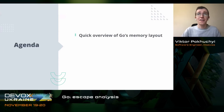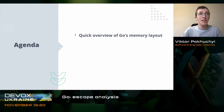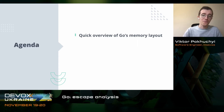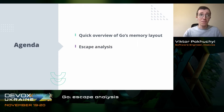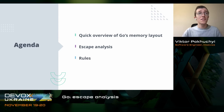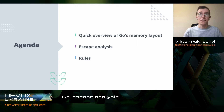So let's take a look at our agenda. First of all, we will take a look at a small overview of Go Memory layout — which types of memory we have. After that, it will be easy for us to go to the main topic of today's discussion, which is Escape Analysis, and after that we will try to generate some rules that can help us in our development.